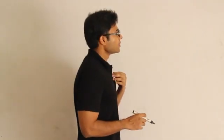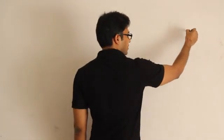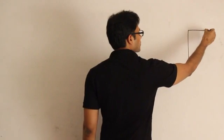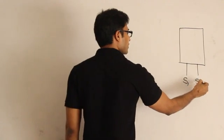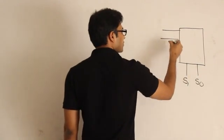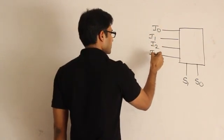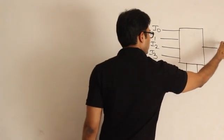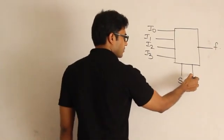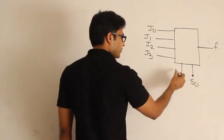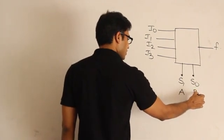Now let's see how a multiplexer could be used to implement functions. A multiplexer is a functionally complete device, which means it should be able to implement any function possible. So let us say we have s1 and s0 as select lines and inputs i0, i1, i2, i3, with output f. I'll give variable a to s1 and variable b to s0.